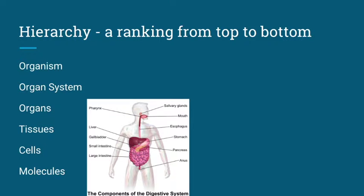The word hierarchy means to rank things from top to bottom. It's just a way that humans organize or describe how things are put together. Humans describe organisms at a few different levels of organization that are in a hierarchy from the top to the bottom, or from big to small.